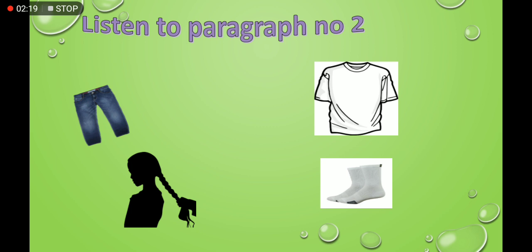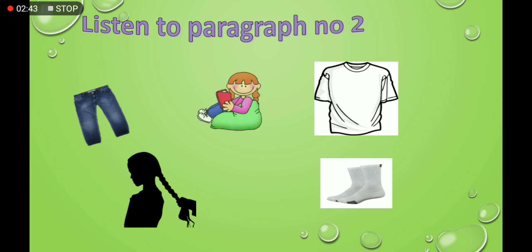Now listen to paragraph number 2. Sara's reading a book. She is wearing blue jeans, a white t-shirt, white socks and white trainers. She is quite a tall girl. She has long black hair in plaits.